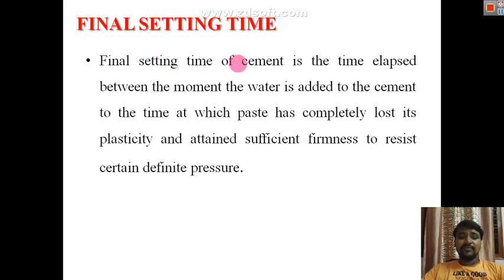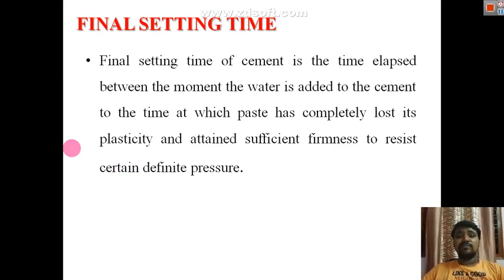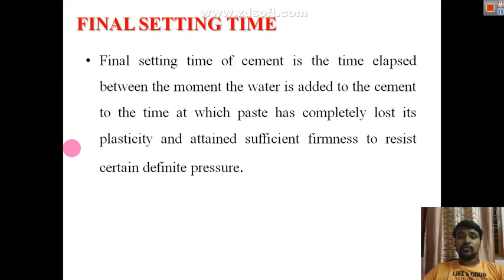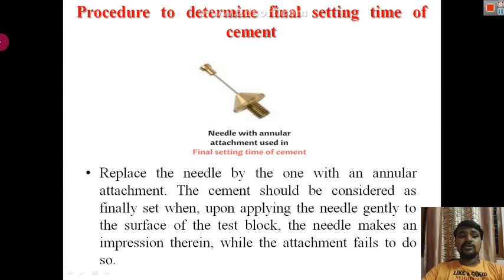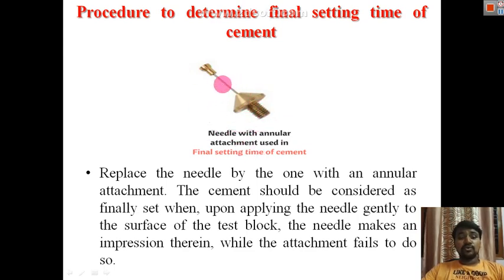Final setting time of cement is the time elapsed from the moment water is added to cement until the paste has completely lost its plasticity and attained sufficient firmness to resist some definite pressure. In simple terms, at initial stages cement cannot take any load; after several hours it can resist some pressure — that is when final setting occurs.